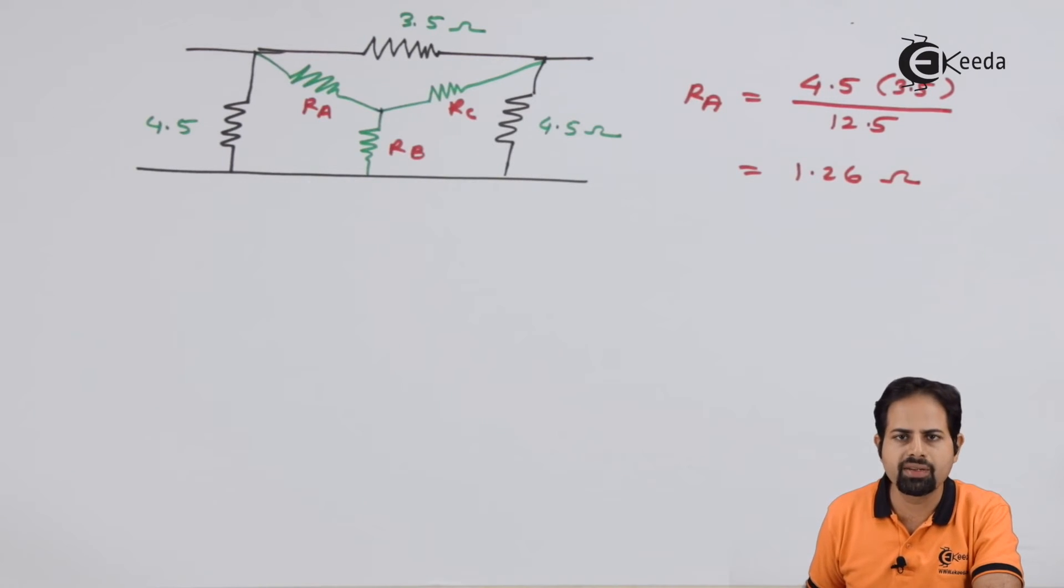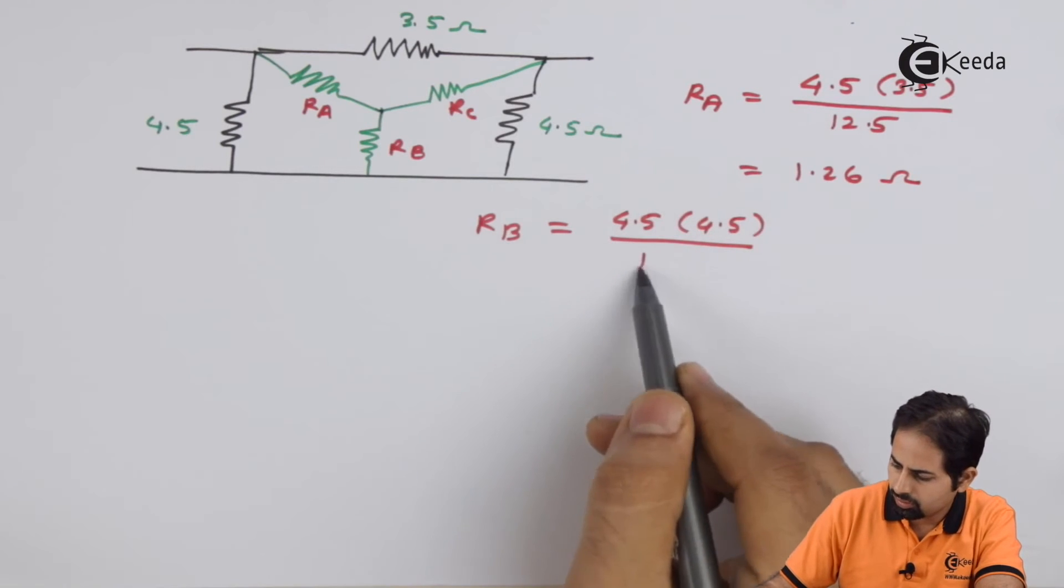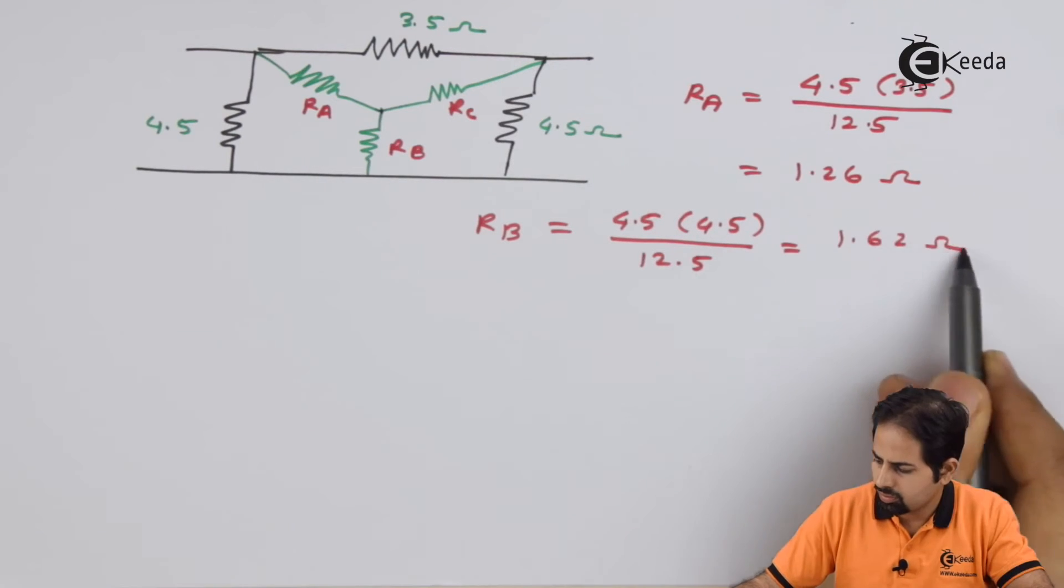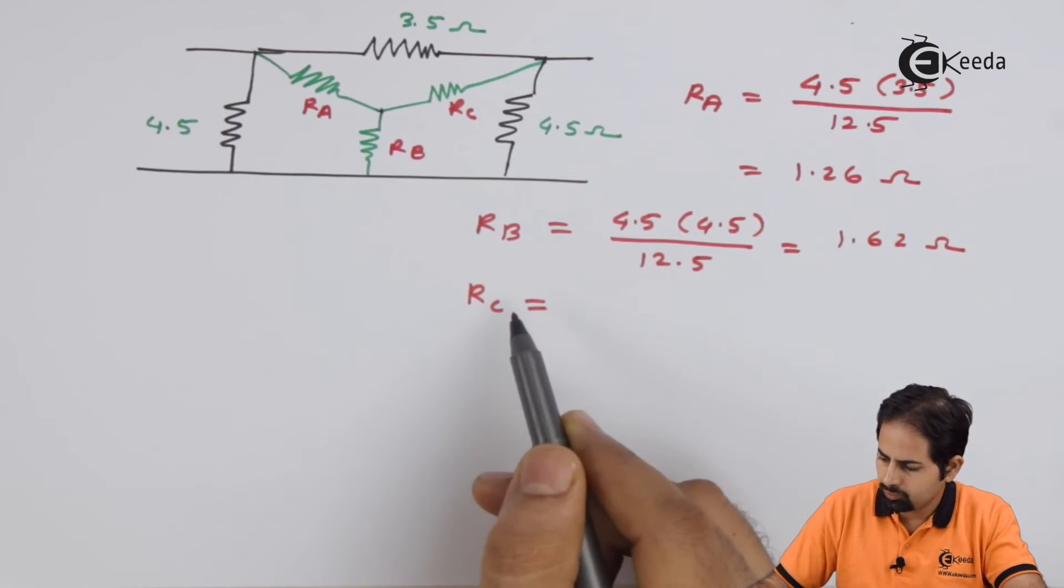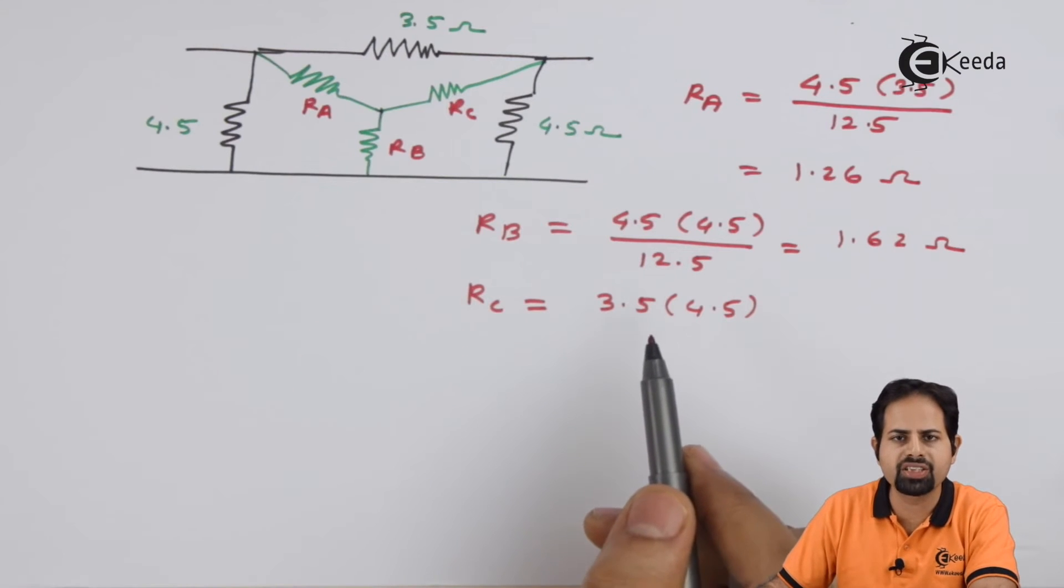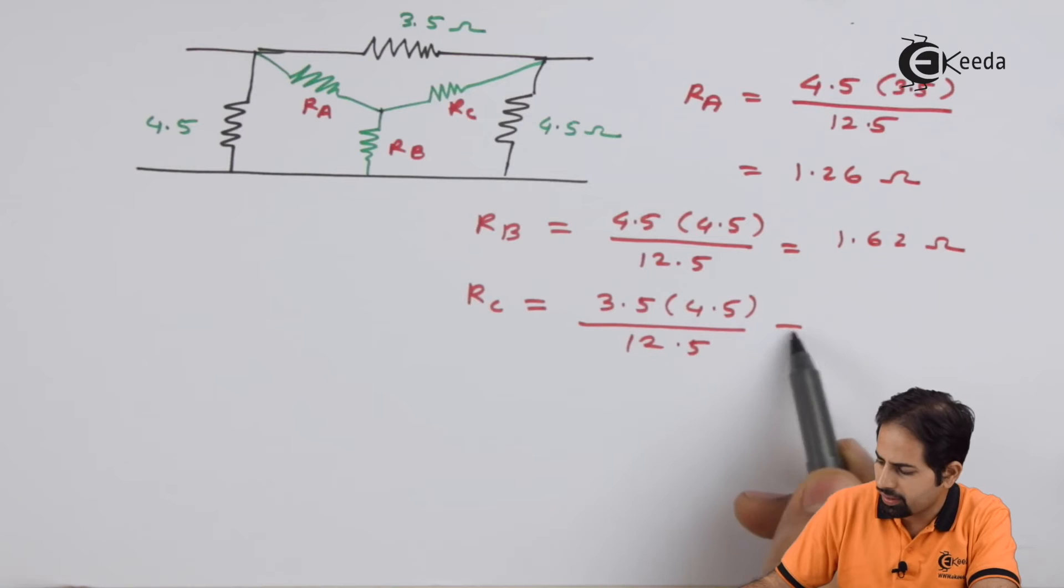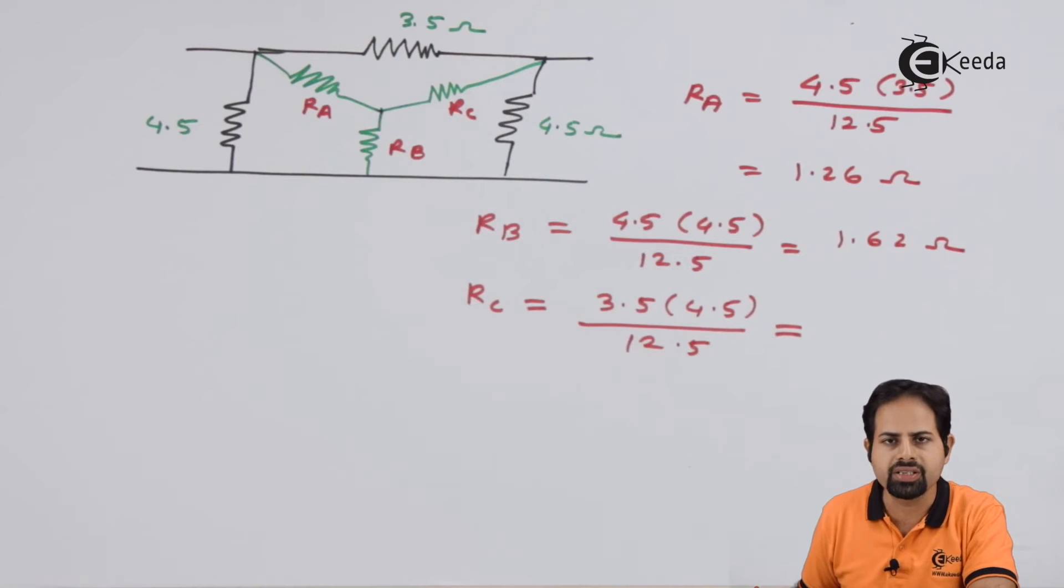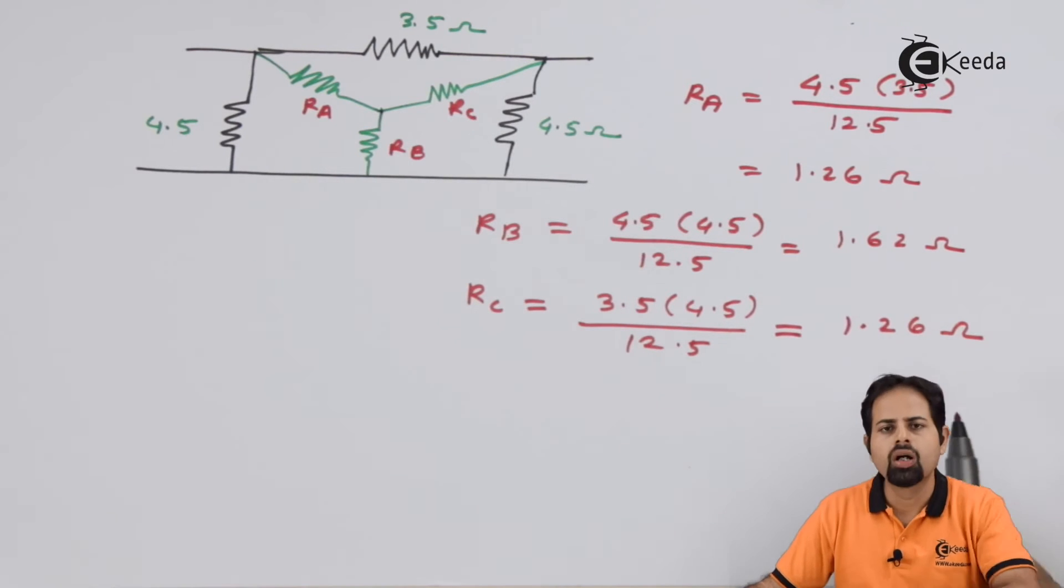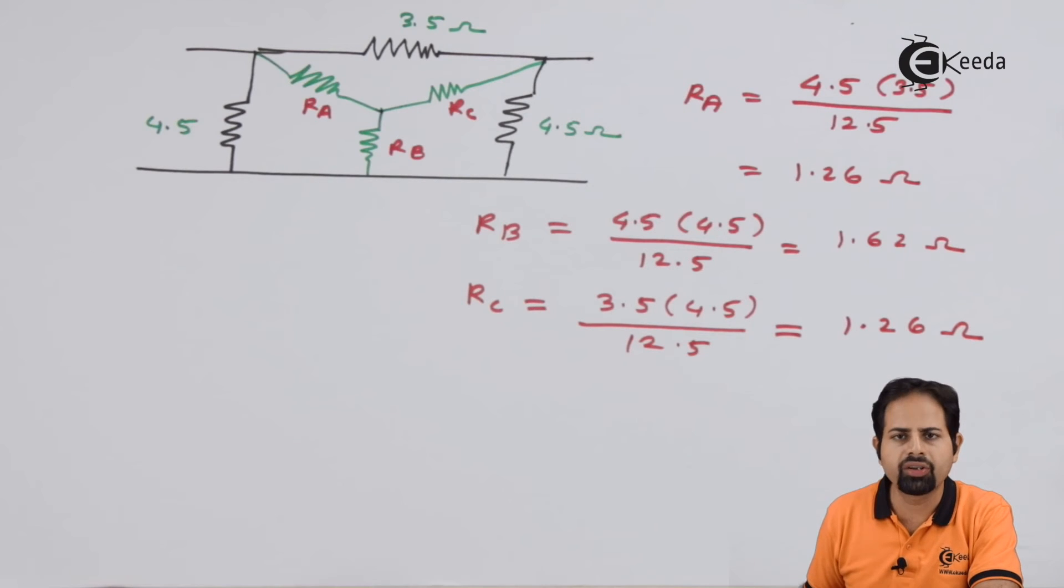Similarly, we will calculate Rb as well as Rc. Now we are calculating Rc, this is connected between 3.5 and 4.5, so they are multiplied. And the result is 1.26 ohms. Now we will redraw the circuit with three resistances in star connection.